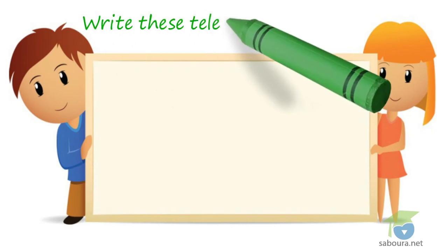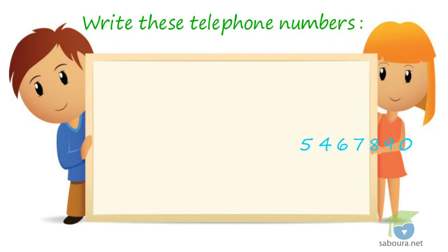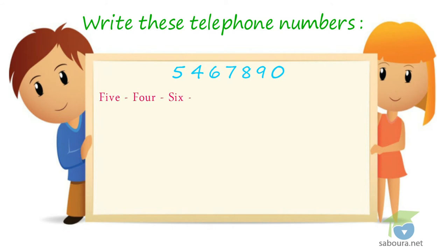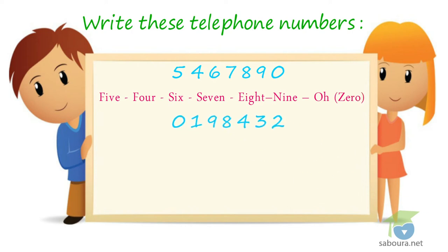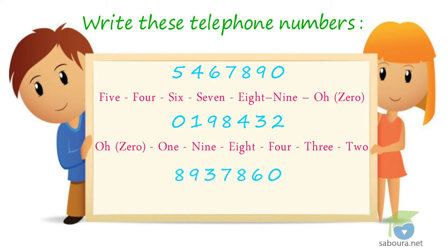Write these telephone numbers. 5-4-6-7-8-9-0. 0-0-1-9-8-4-3-2. 8-9-3-7-8-6-0.